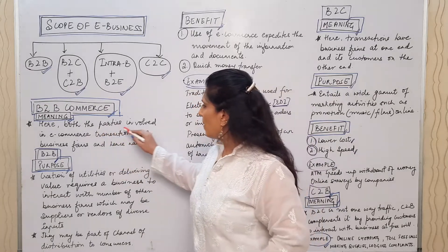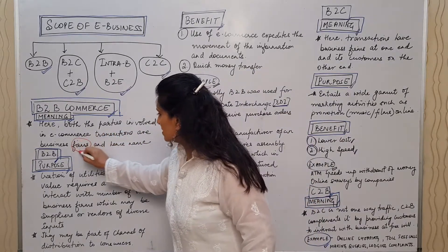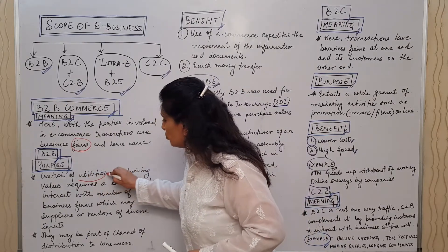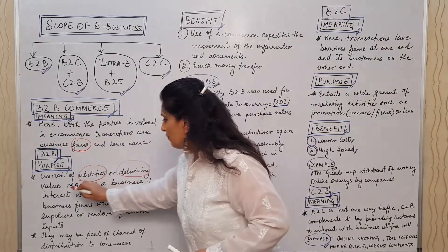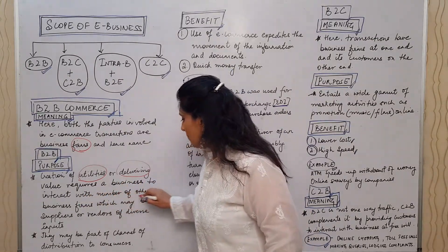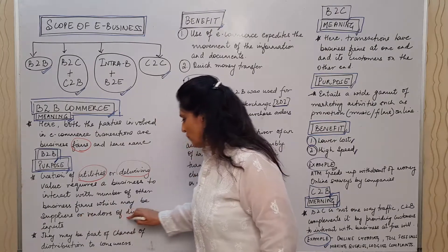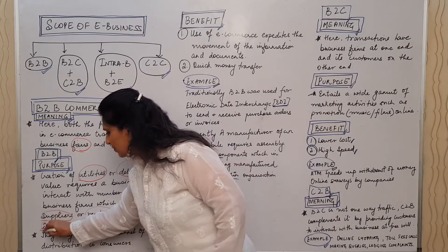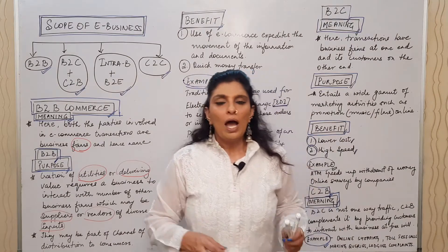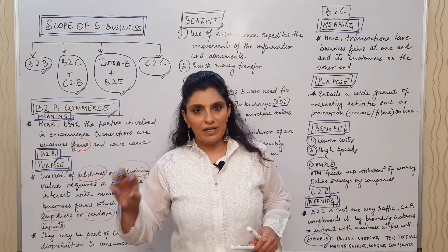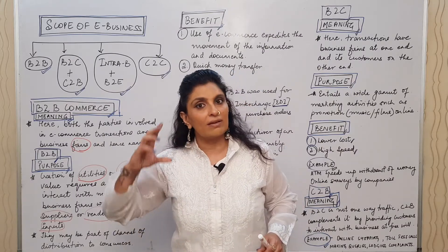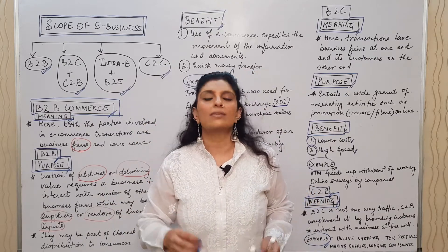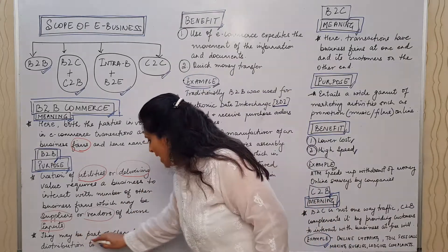Both parties in a B2B e-commerce transaction are business firms. The purpose is creation of utility — delivering value requires a business to interact with other businesses such as suppliers, vendors, or providers of diverse inputs. For example, a car assembling firm communicates with different vendors for different components — that is B2B.